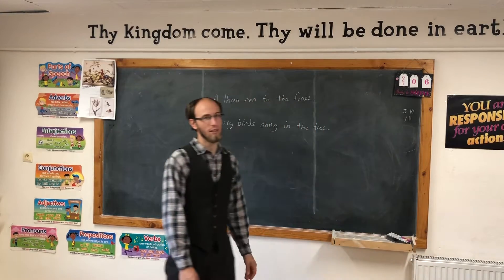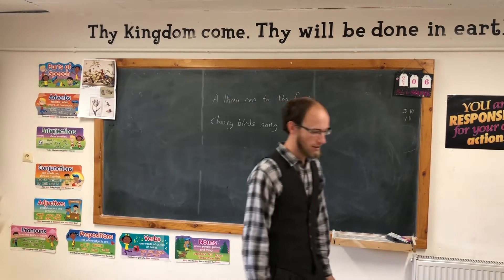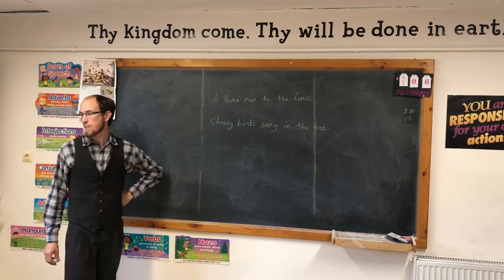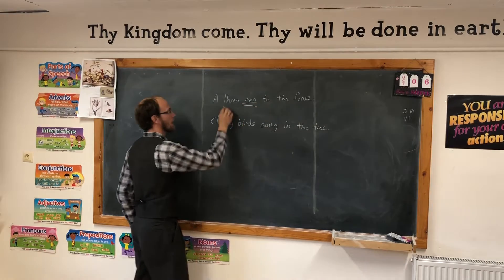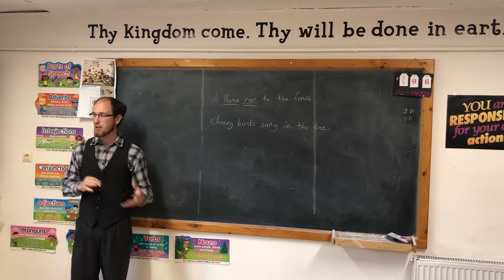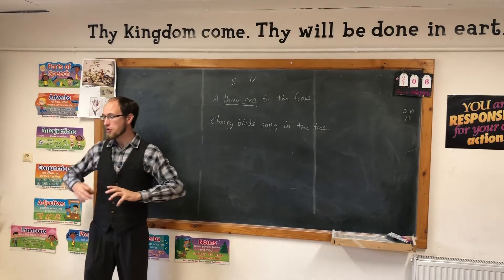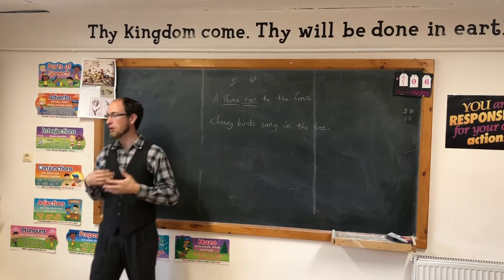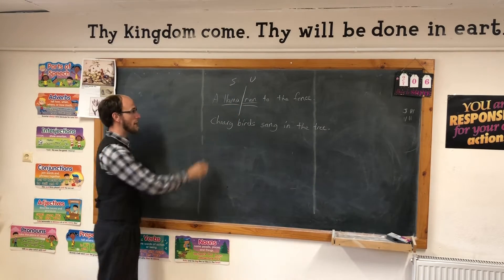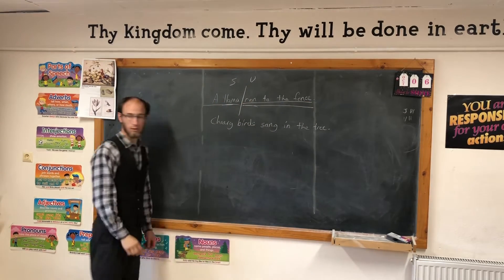The new lesson. 'A llama ran to the fence and cheery birds sang in the tree.' Let's look at 'the llama ran to the fence.' What is the verb? Ran. And what is the subject? Llama. We can break this sentence down and say it has two basic parts: a subject and a verb. Or we can talk about those two parts as a complete subject or a complete predicate. The complete would mean all the words that go with it — so all the words with the subject would be 'a' and 'llama,' and all the words with the verb is 'ran to the fence.'